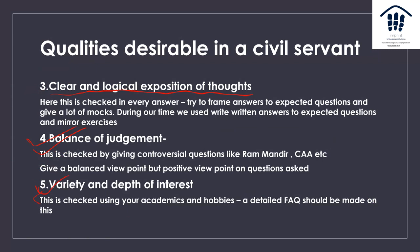One of the most important areas is variety and depth of interest, checked using academics and hobbies. A detailed FAQ should be made — at least 20-25 questions. You should be well-versed with both theoretical and practical aspects. For example, if chess is your hobby, know the theory — when it was started, its historical aspects — and practically, know which tournaments are ongoing and who's the world number one.